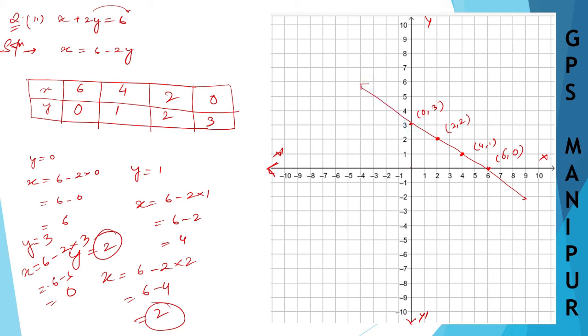This is our graph. You can write the equation x plus 2y equals 6 here to label it.